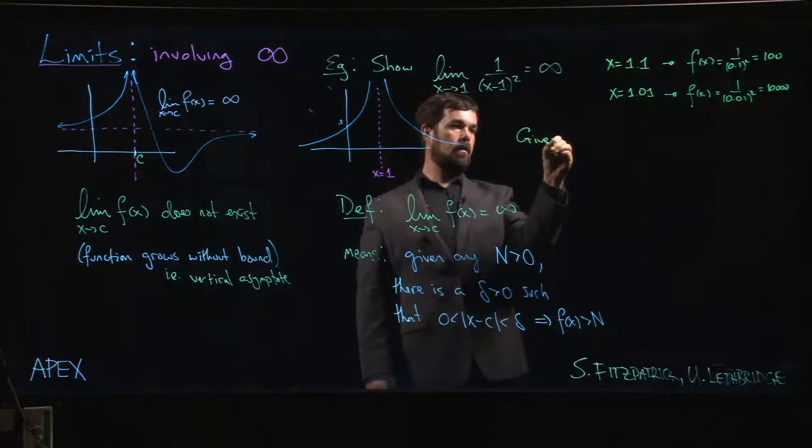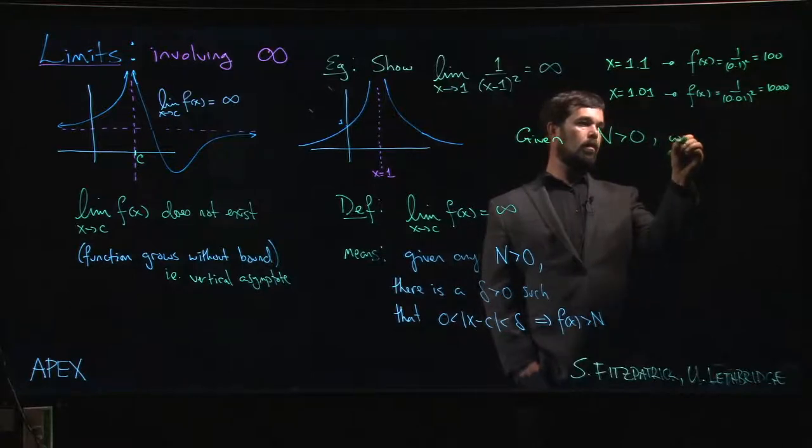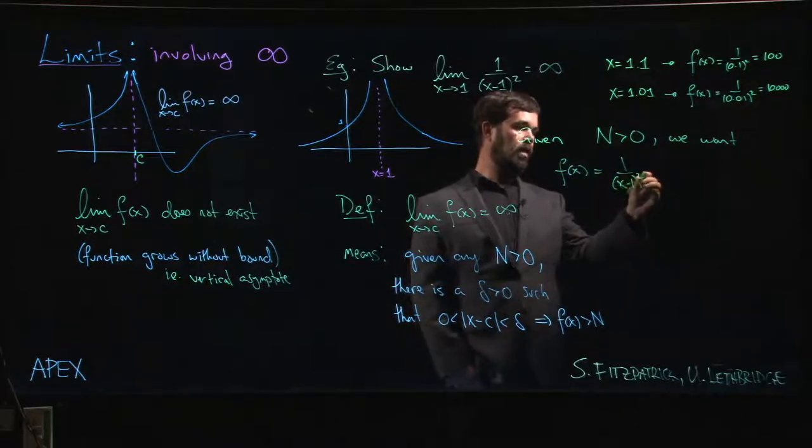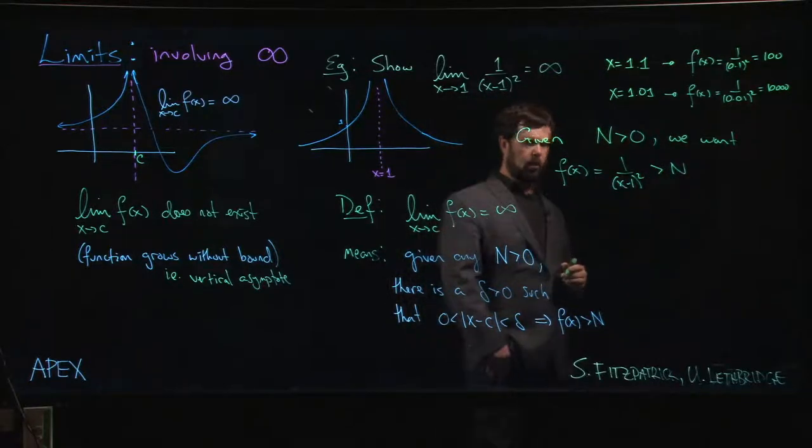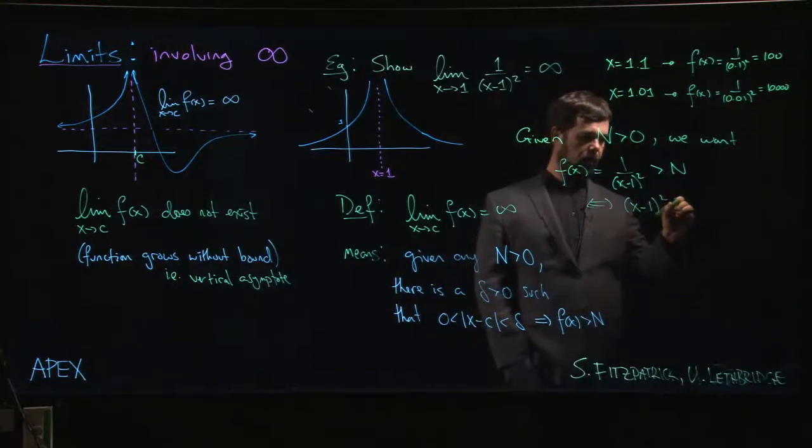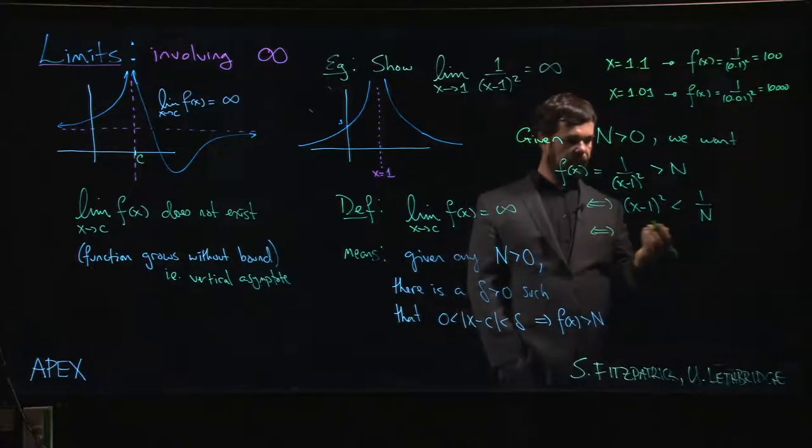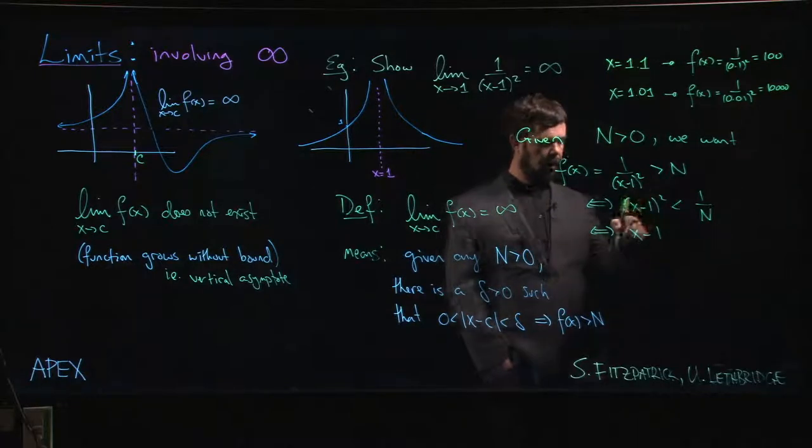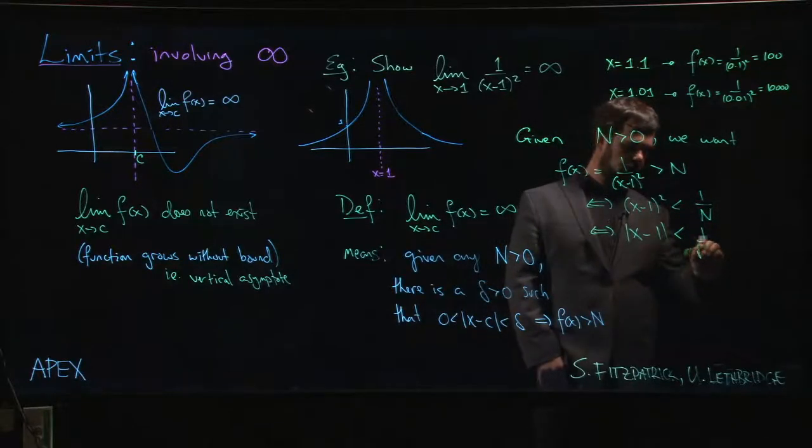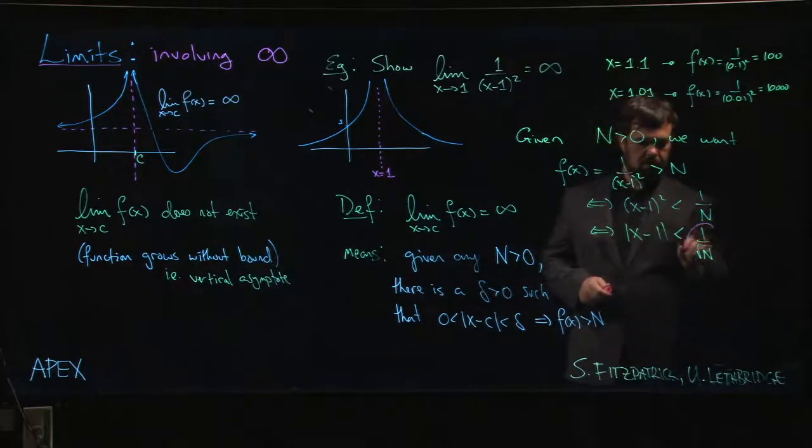In general, the way we see this is we'd say: if somebody gave me some N, we're given this N bigger than zero, and we want f of X, which is 1 over (X minus 1) squared, to be bigger than N. Everything's positive here, so this is the same thing as saying (X minus 1) squared should be smaller than 1 over N. Because everything is positive, that's the same thing as saying that |X minus 1| has to be less than 1 over the square root of N. But aha, this should look familiar - we found our delta.